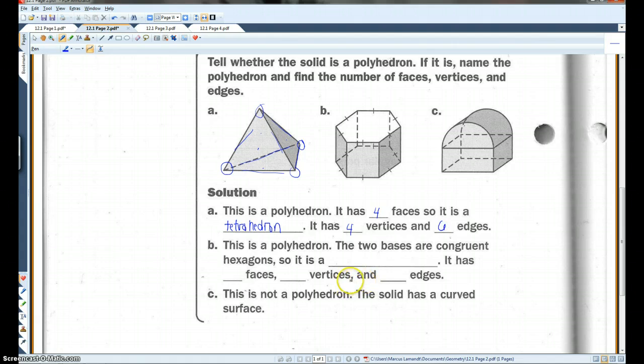The second one, this is a polyhedron, the two bases are congruent hexagons, so it is a hexagonal prism.